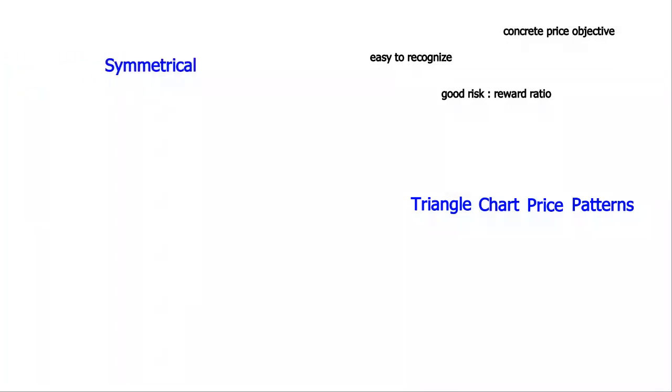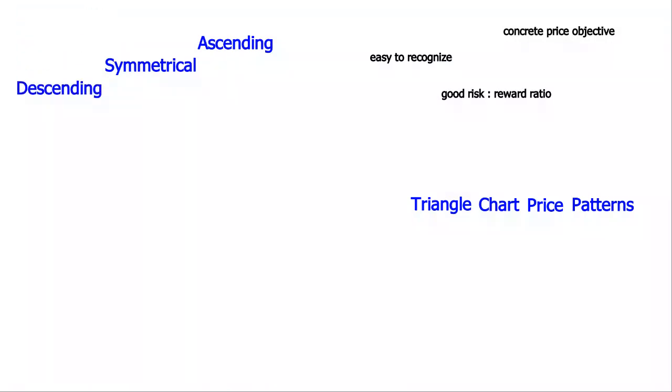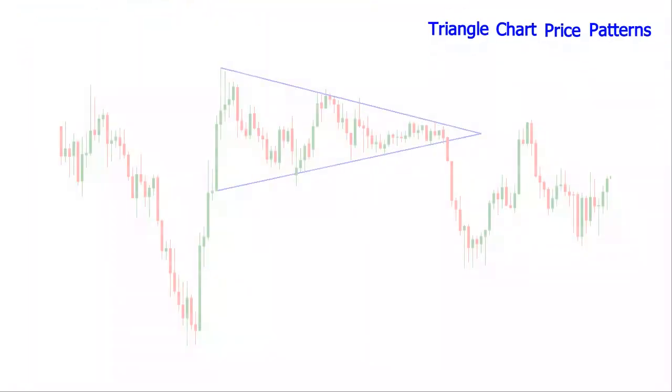Symmetrical, ascending, and descending are the three types of triangle patterns. The reliability of these patterns is debatable, but all of them can be traded successfully.